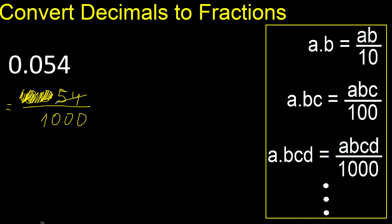1, 2, 3. Can be simplified because it can be divided by the same number. Divided by 2, divided by 2.